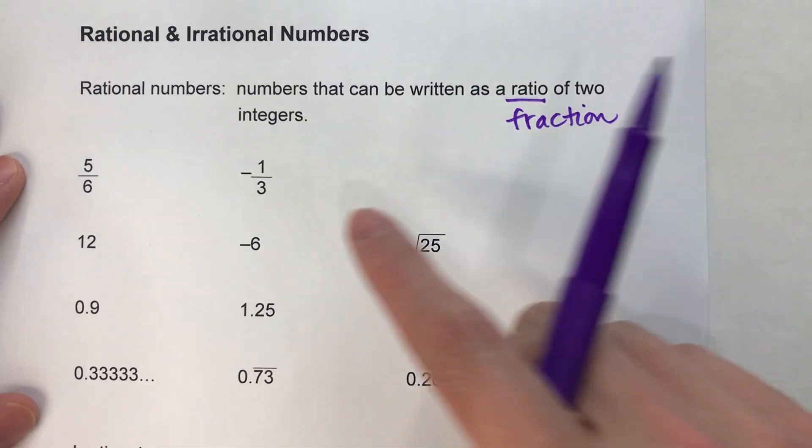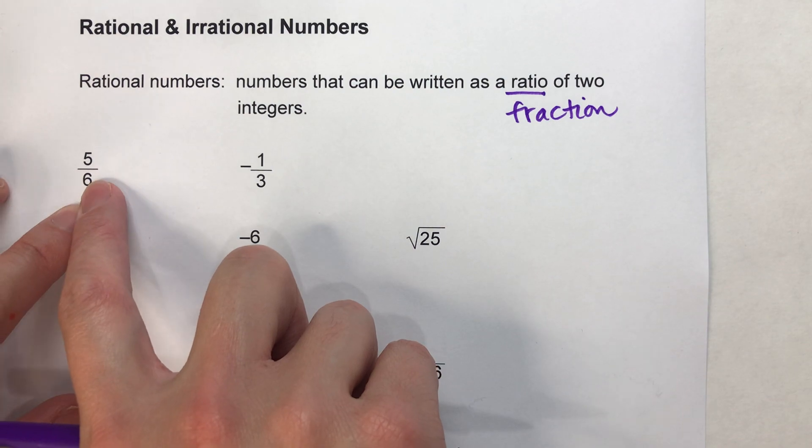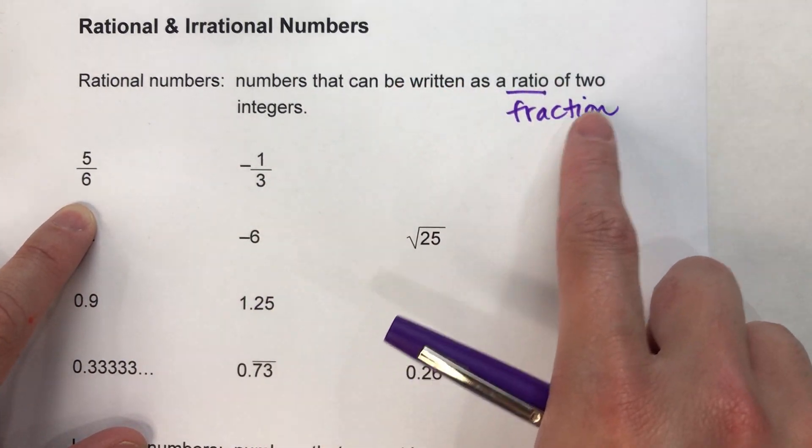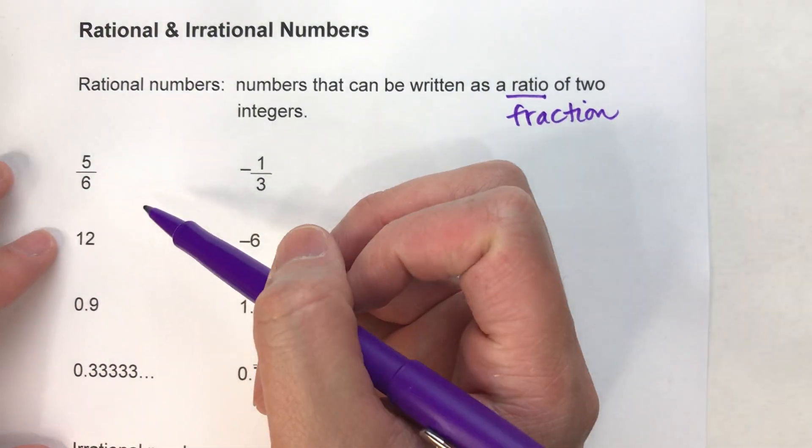I've given you some examples of rational numbers. For example, all fractions are rational. By definition, if you can write it as a fraction, then it's rational. So a fraction is already written as a fraction, so it's rational.